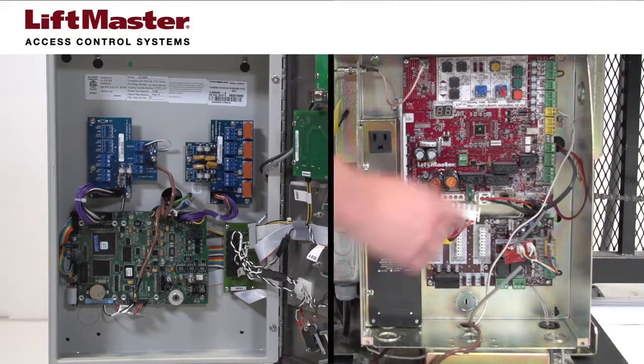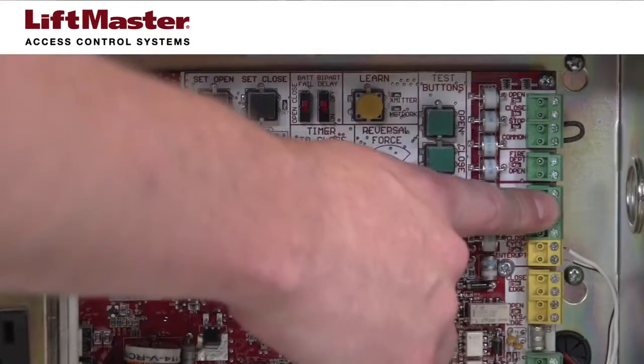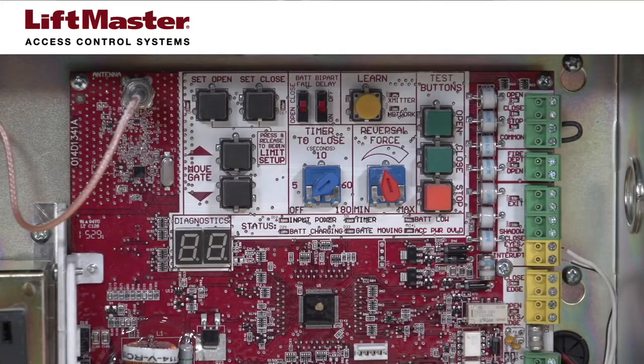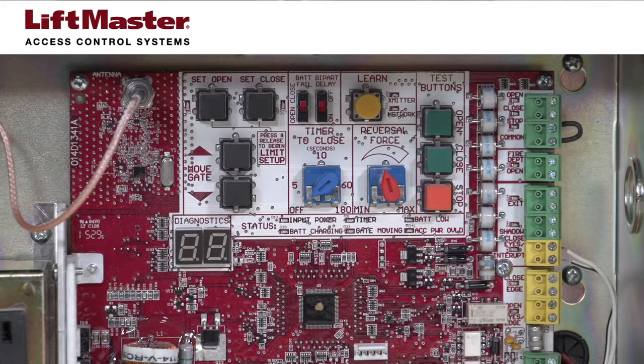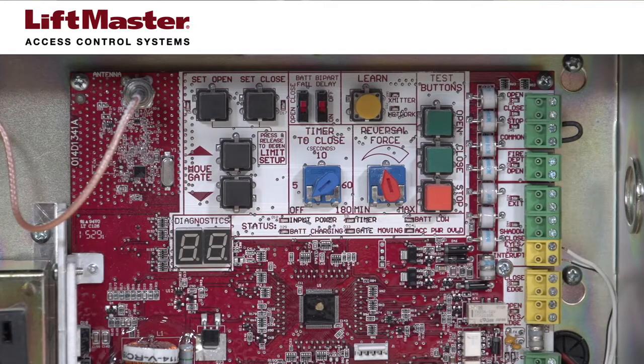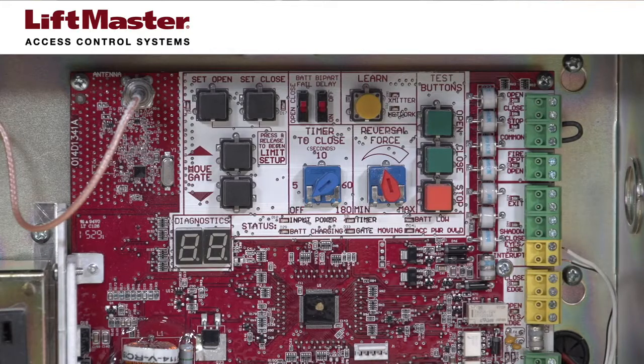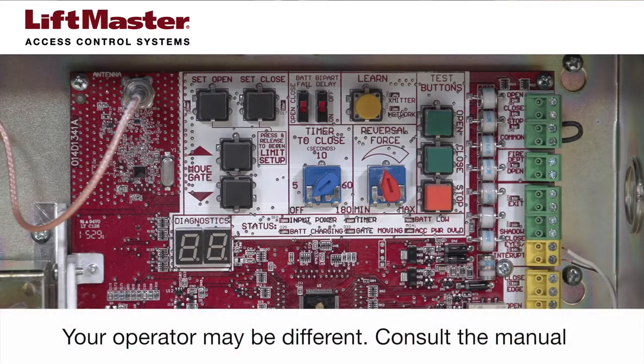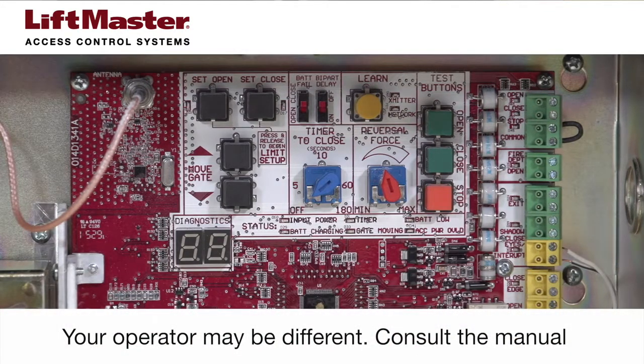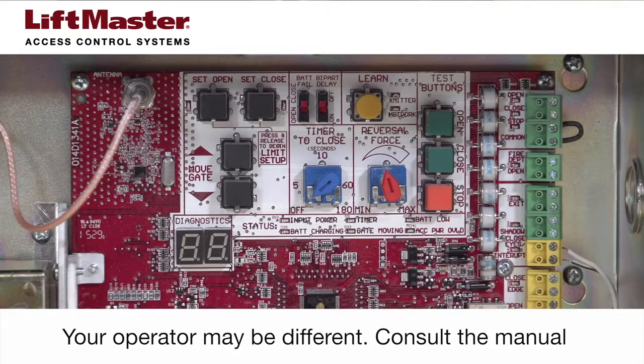For this demonstration, the dry contact input on the CSL24U is the exit terminal. This input provides a soft open command that does not override external safeties and does not reset alarm conditions. Your operator may be different, so be sure to confirm which input is a soft open input before wiring.